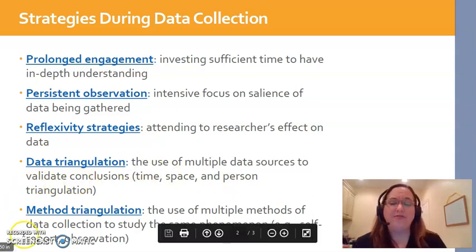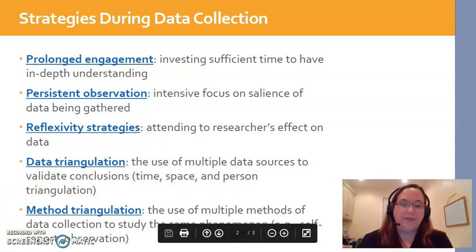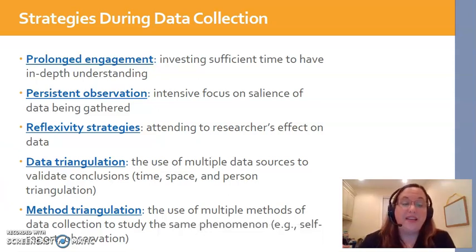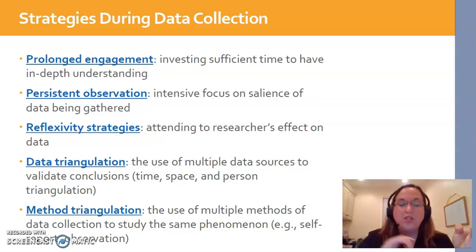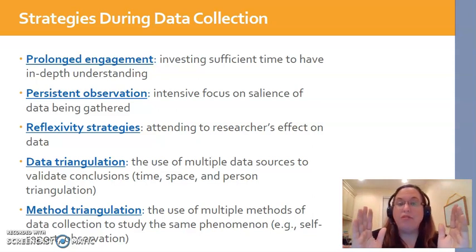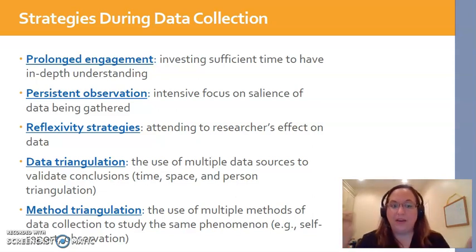The final type of triangulation for data collection on this slide is method triangulation — using more than one method of data collection during the same study. That could mean doing observation and also doing self-report through interview. If you observe and interview about the same topic and both types of data agree, that enhances the credibility of the study.